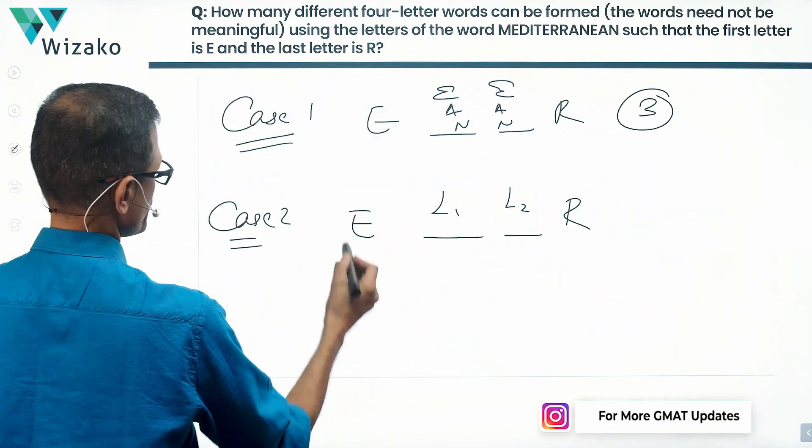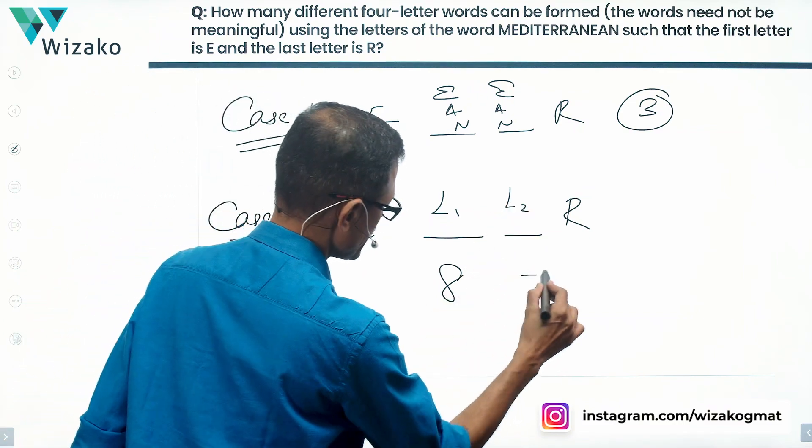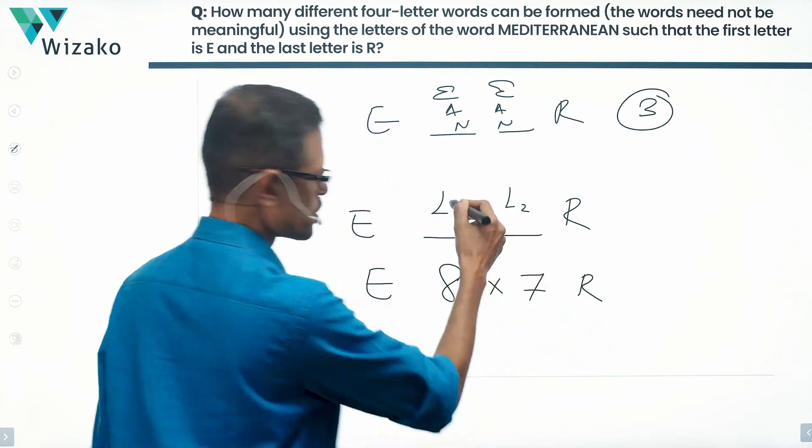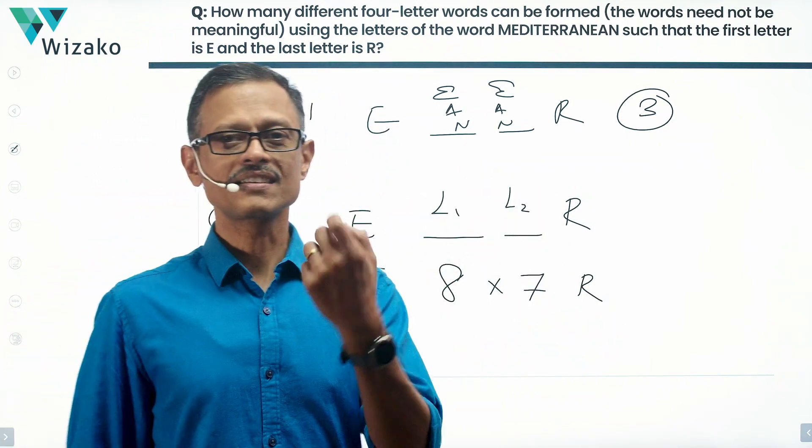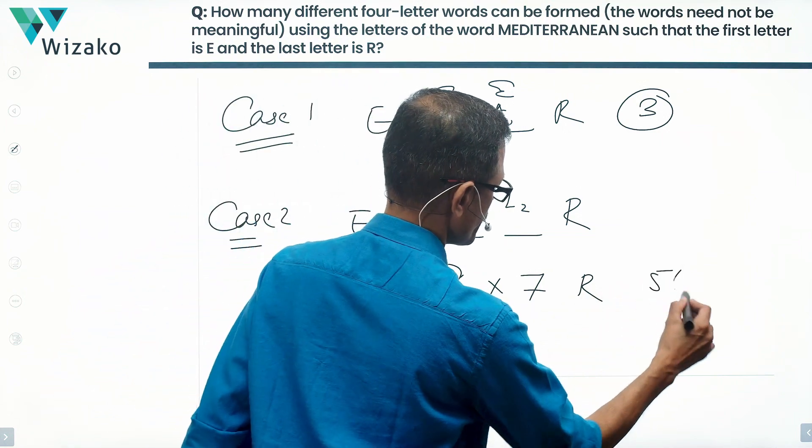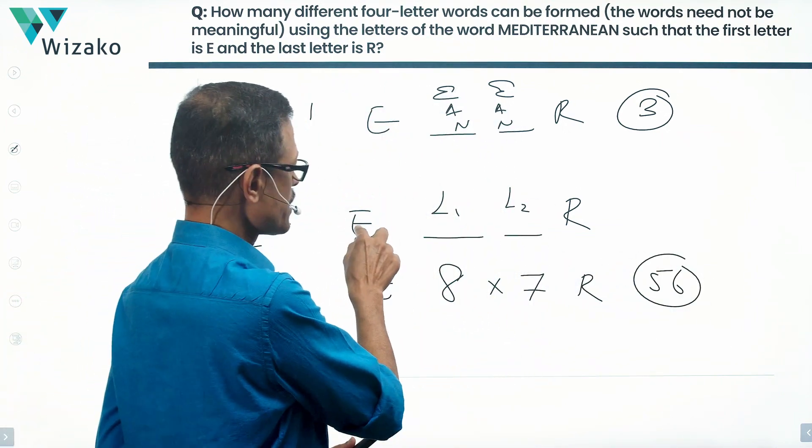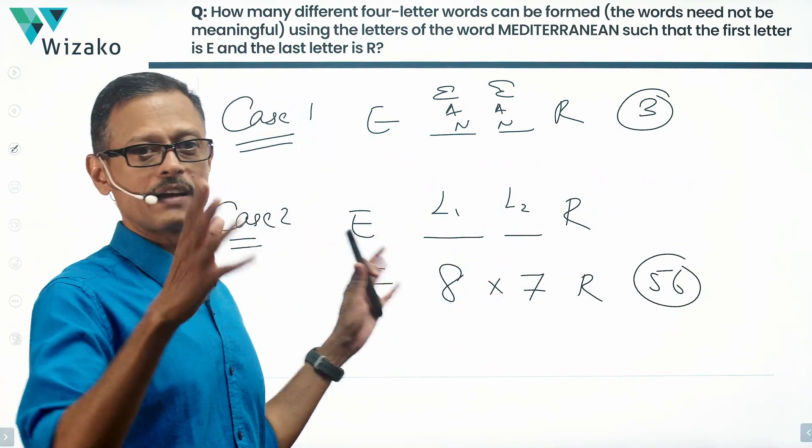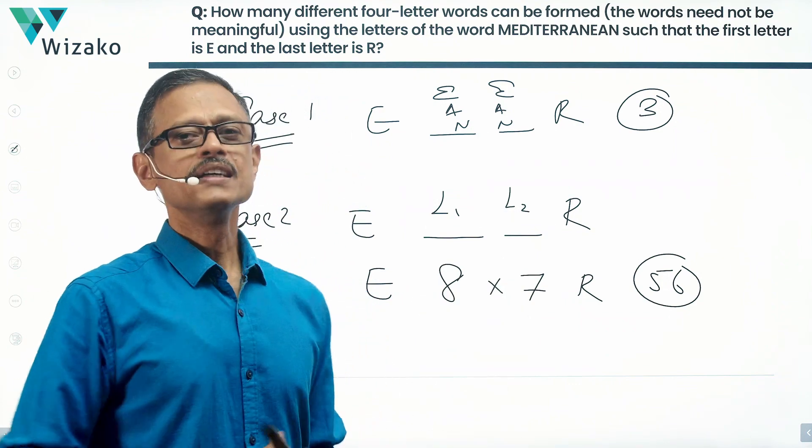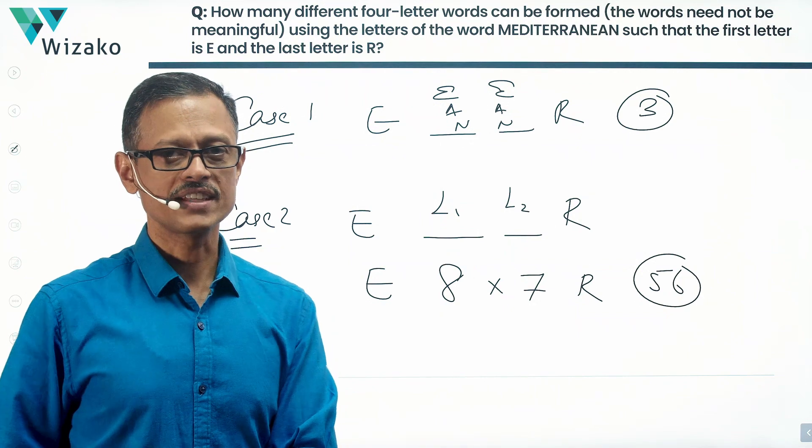Pick one letter for the second slot, which can be done in eight ways. Pick one for the third slot from the remaining seven. So 8 times 7 equals 56 such possibilities where the second and third letters are two distinct letters. It can still be E, E, A, R - perfectly alright, E is repeating. But what we're interested in is how the second and third positions alone work out. They're two distinct ones out of the eight. So it is 8P2 or 8 times 7, which is 56 ways.